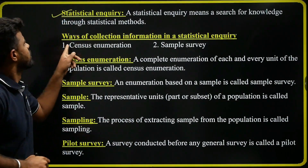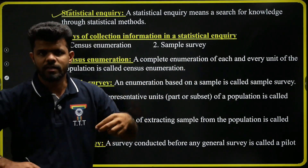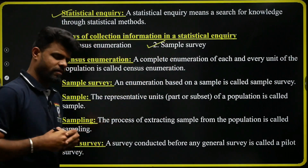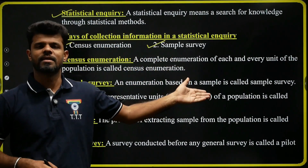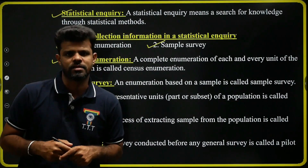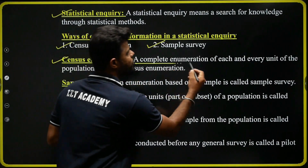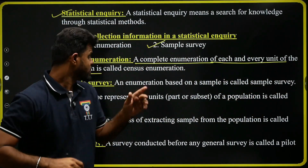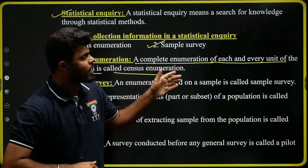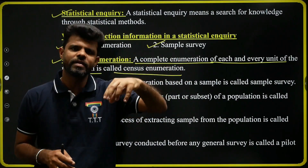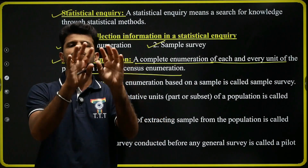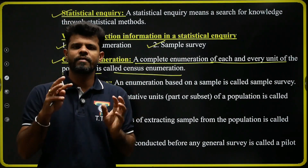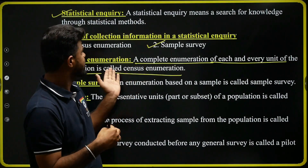The second definition is the ways of collecting statistical data. There are two different methods. The first one is the census enumeration method, and the second is sample survey. Census enumeration method means a complete enumeration — that is, a complete investigation of each and every unit of a population. Population means the total number of units under consideration. For example, in a particular locality there are 100 families, and we investigate each and every family to collect data.